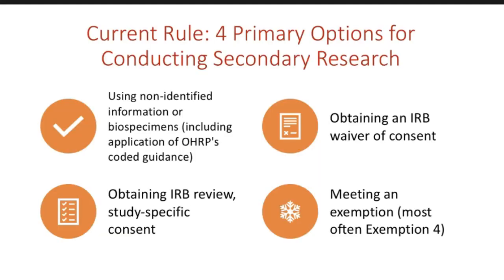Under the current rule, there are four primary options for conducting secondary research. One, the researcher could use non-identifiable information or non-identifiable biospecimens. Second, one could obtain IRB review if one has collected a study-specific consent for that research, or one could obtain an IRB waiver of consent. And finally, one could meet an exemption category, most often exemption 4.